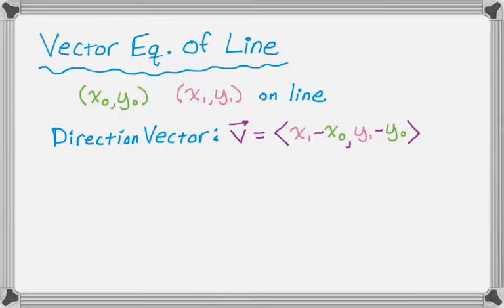So we'll do x1 minus x0 comma y1 minus y0, which, again, is very similar to slope.